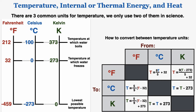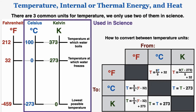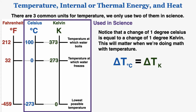There are three common units for temperature: Fahrenheit, Celsius, and Kelvin. We only use Celsius and Kelvin when working in science. The table on the left shows some important temperatures on each scale — the lowest possible temperature, the temperature at which water freezes, and the temperature at which water boils. On the right is a table showing conversions between units. Notice that a change of one degree Celsius is equal to a change of one degree Kelvin — when you go up 100 degrees Celsius you also go up 100 degrees Kelvin. So a change in temperature in Celsius is always equal to a change in temperature in Kelvin; they're always the same number.